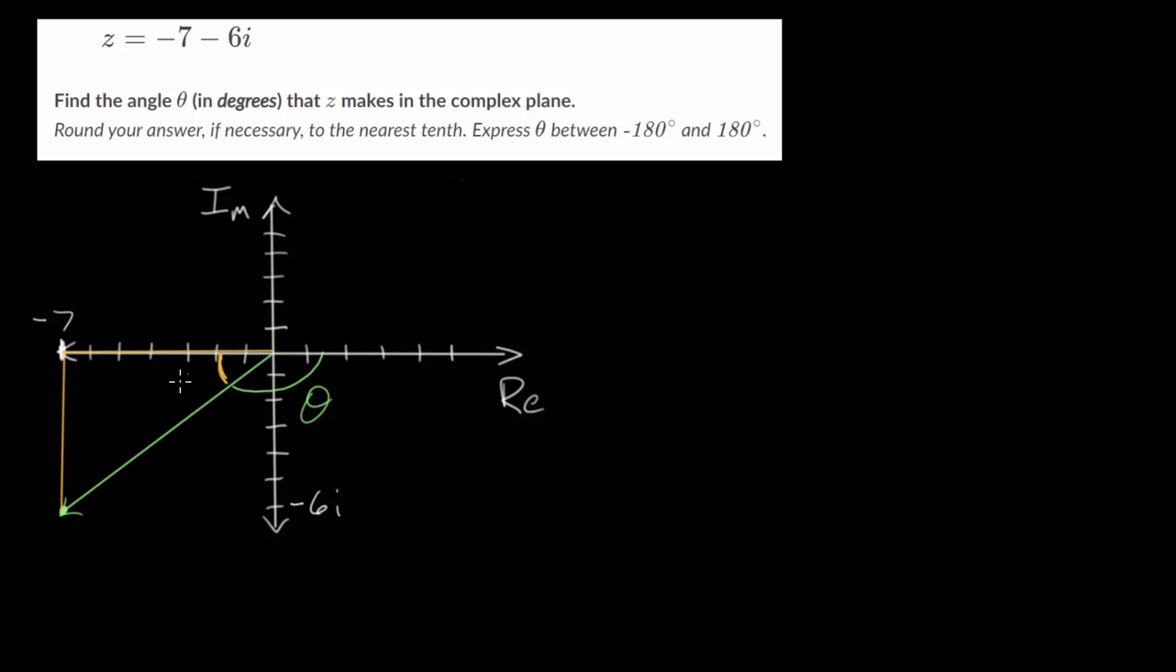We can figure out what this angle on the inside of the triangle is. We can call this whatever we want. Let's call it theta 1. Once we figure out this triangle on the inside, we can recognize that this angle right here,